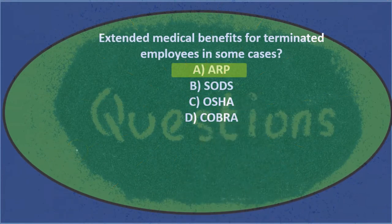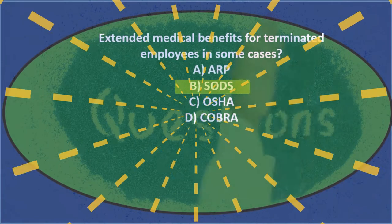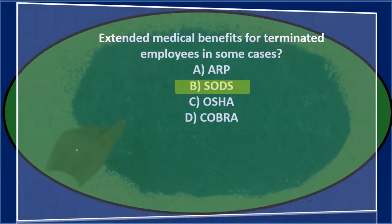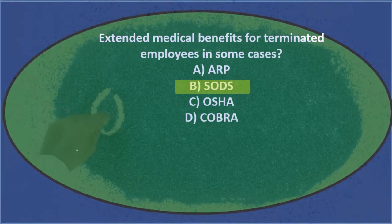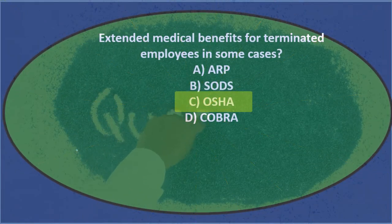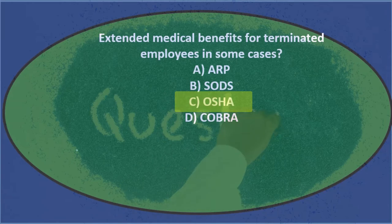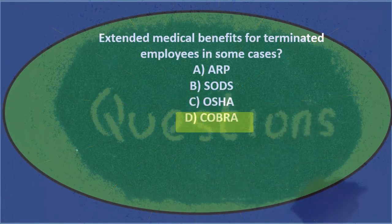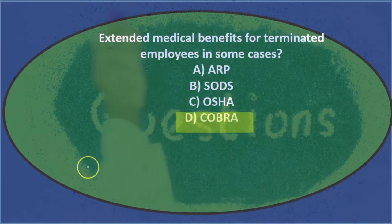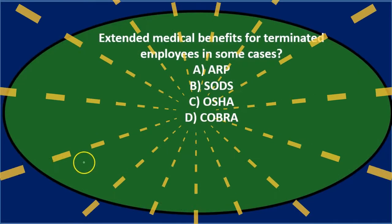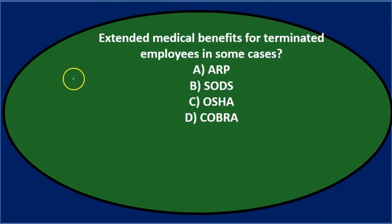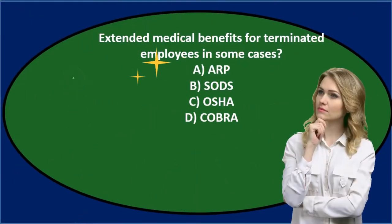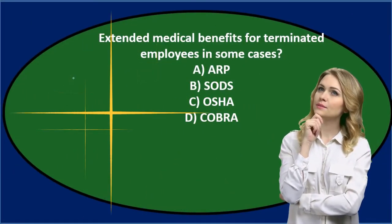The answer choices are: A) ARP, B) SODS, C) OSHA, or D) COBRA. So let's read through this again and see if we can eliminate some of these.